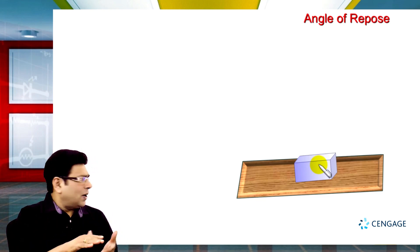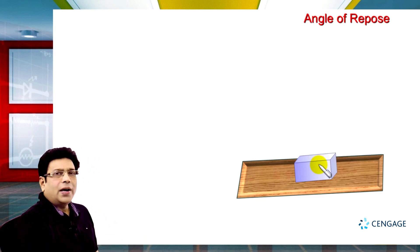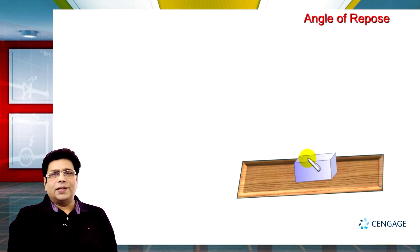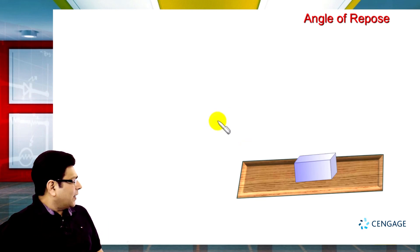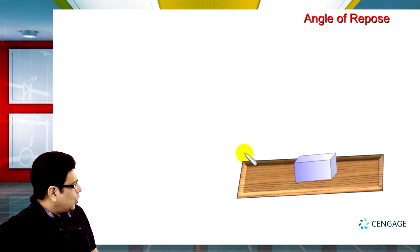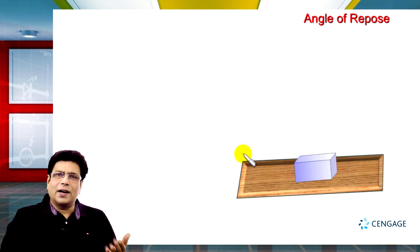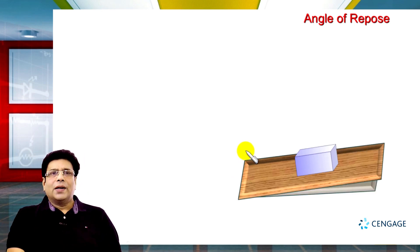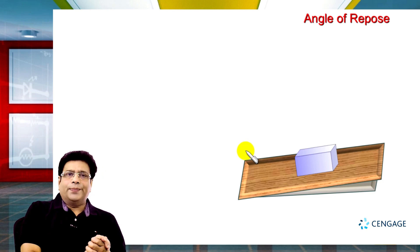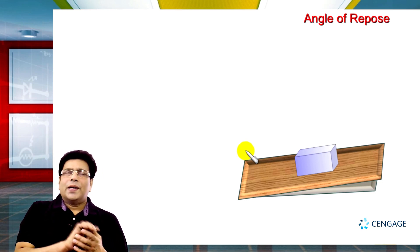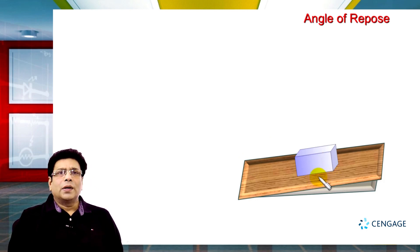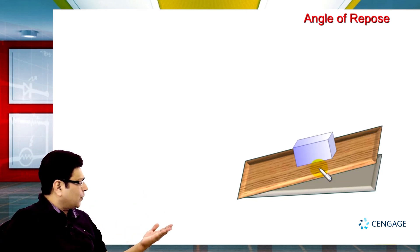We have a rough plank which is on the horizontal surface and a block of mass small m. I will tilt it a little bit like this. You can follow the movement of my pen tip. We observe the block does not slide with respect to the plank — the block is at rest relative to the plank. So let us move further and increase the incline.